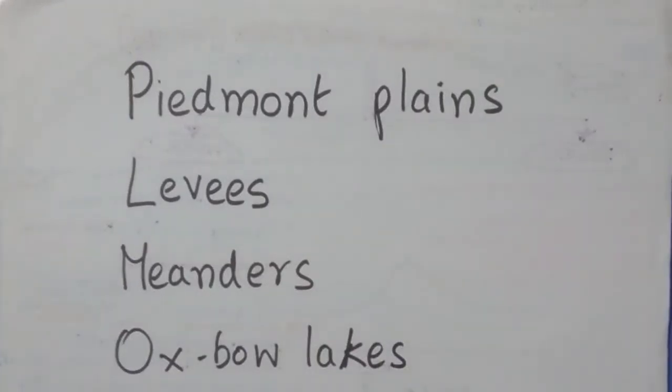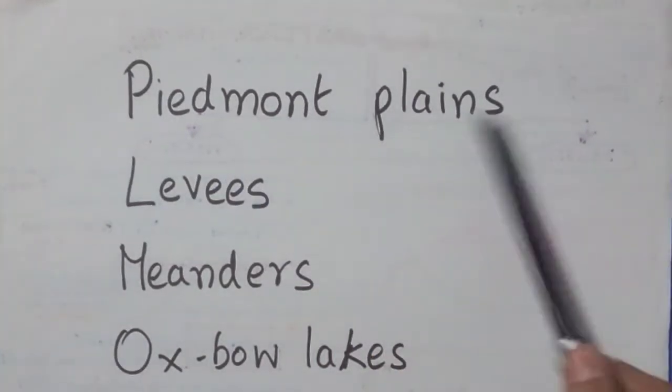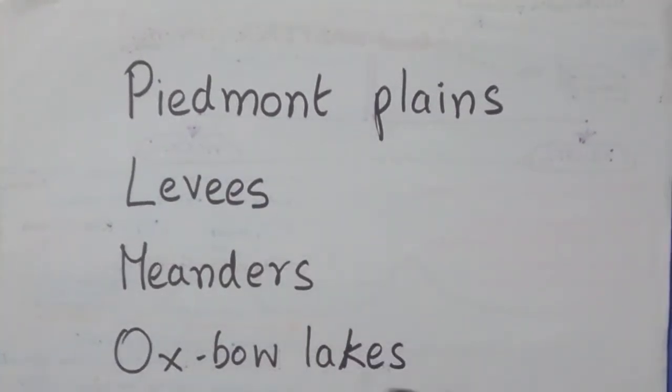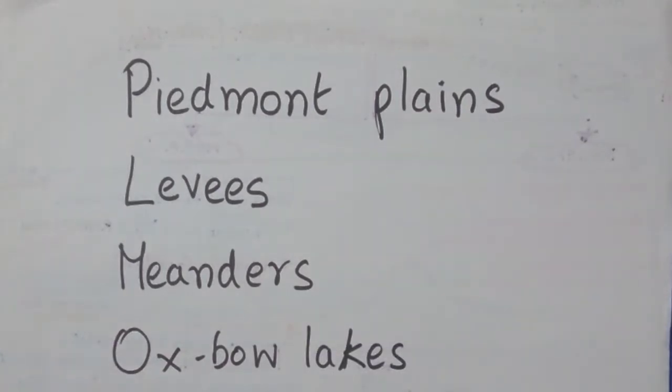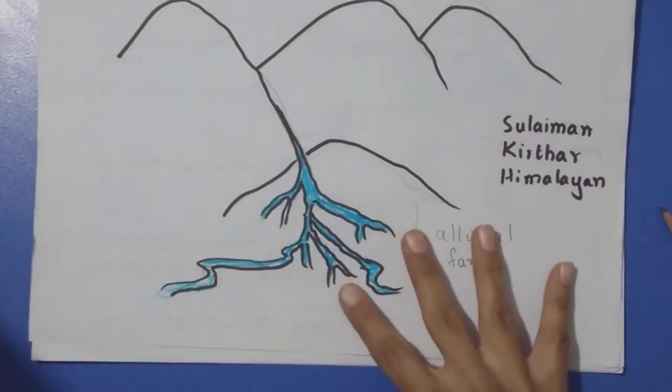Hello friends, today we will be talking about four main features formed by the river as it flows along. They are Piedmont Plains, levees, meanders, and oxbow lakes. I'll be discussing each one in detail as we move along, so keep watching.